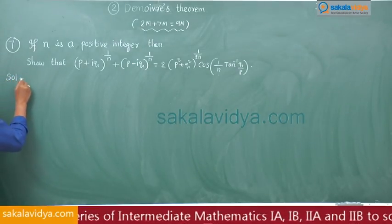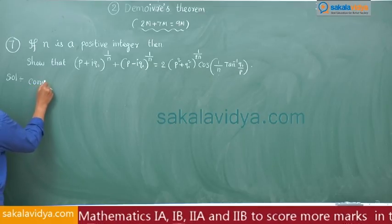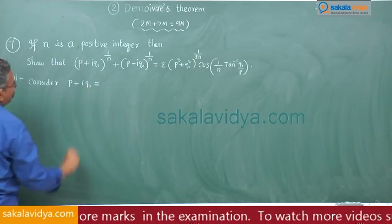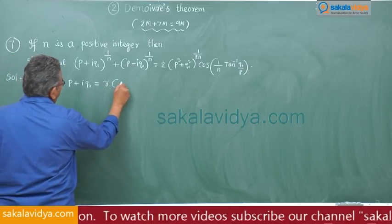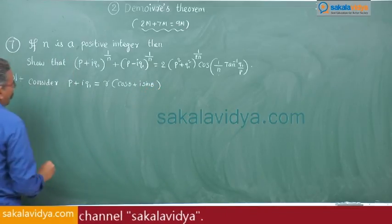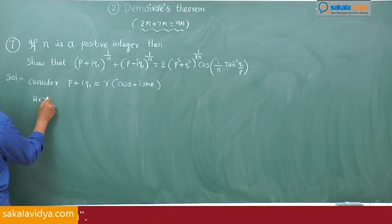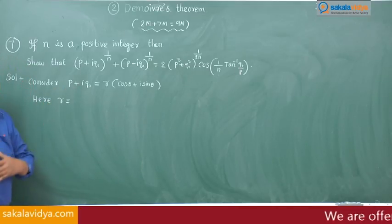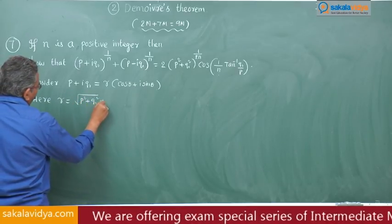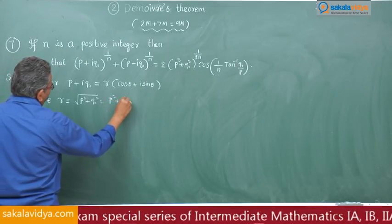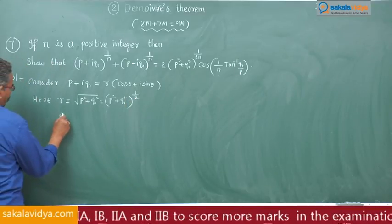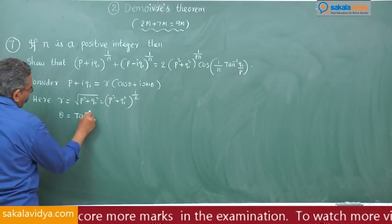First step: consider p + iq — we have to write it in polar form, that is r(cosθ + i sinθ). Here r is equal to the modulus of p + iq, that is √(p² + q²), so r = (p² + q²)^(1/2). And θ = tan⁻¹(q/p).